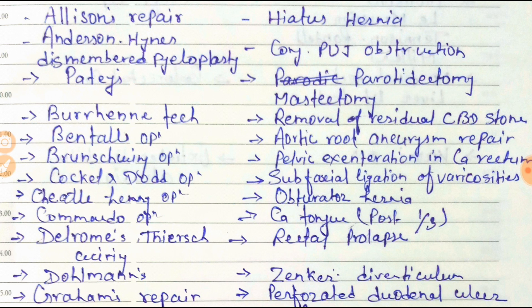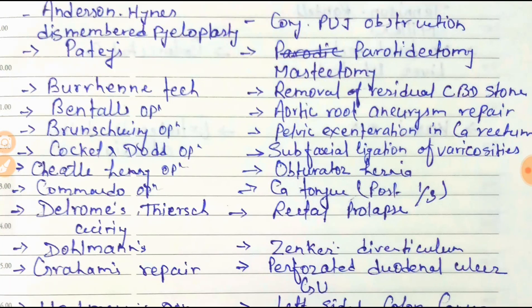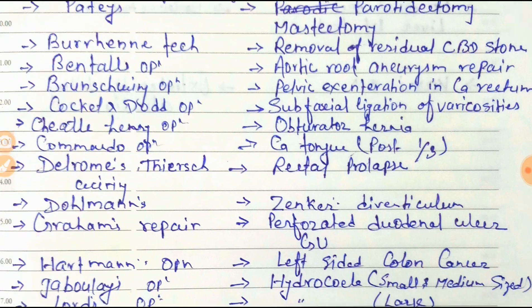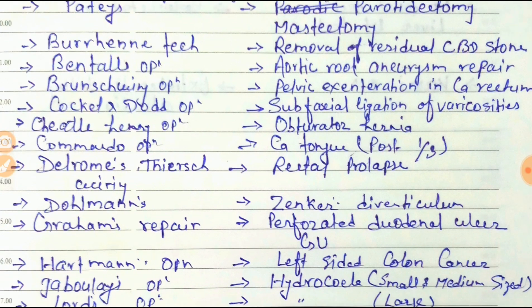For aortic root aneurysm repair, it is Bentall's operation. For pelvic exenteration in carcinoma of the rectum, it is Brunschwig's operation. For superficial ligation of varicoceles, it is Coquet's operation. For obturator hernia, it is the Chetle-Henry operation.